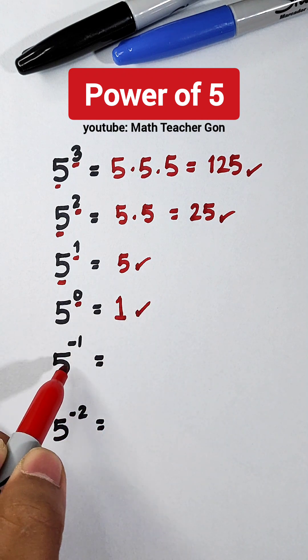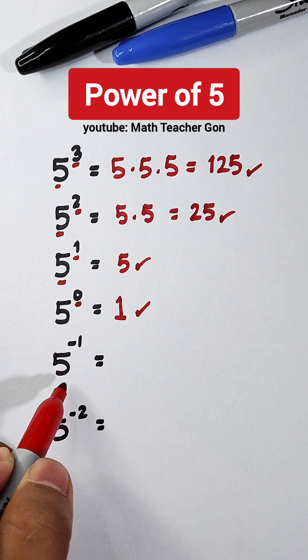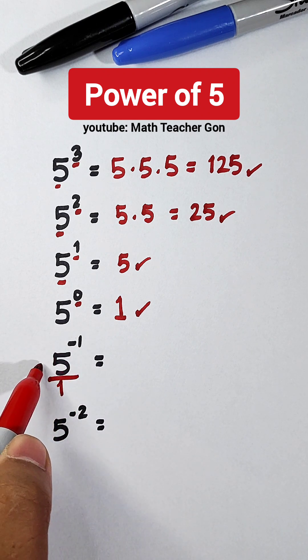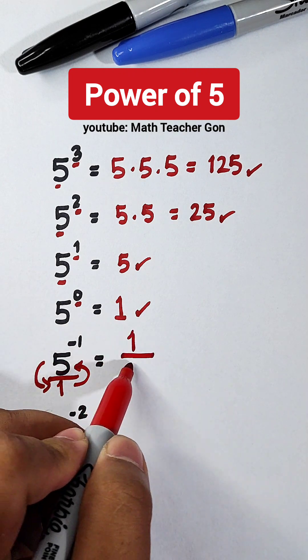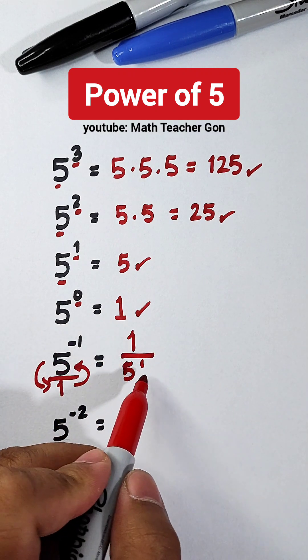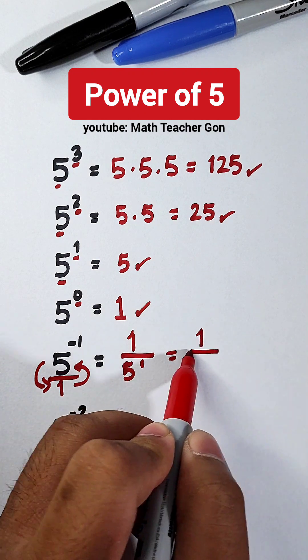Now, we have here a negative number, or negative exponent. So what we need to do is to make this positive, so you need to flip this one here and here, it will become 1 over 5 raised to 1. As you can see, the exponent becomes positive. To simplify this, this is 1 over 5.